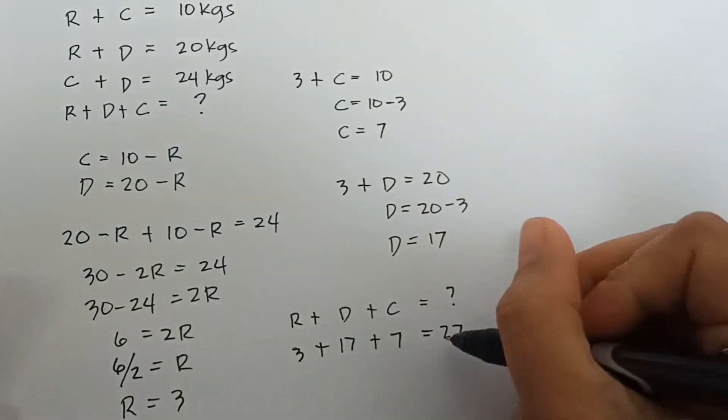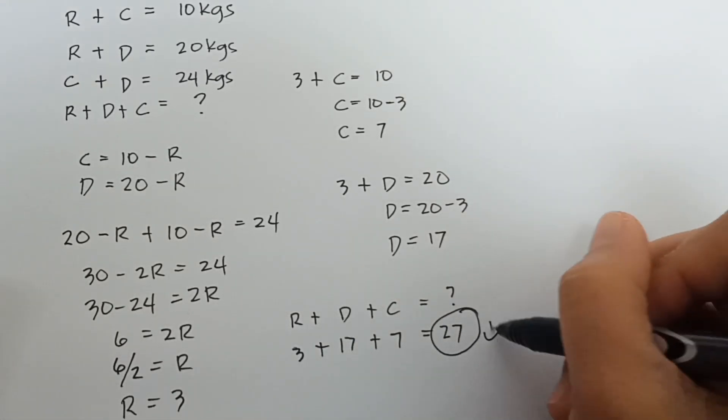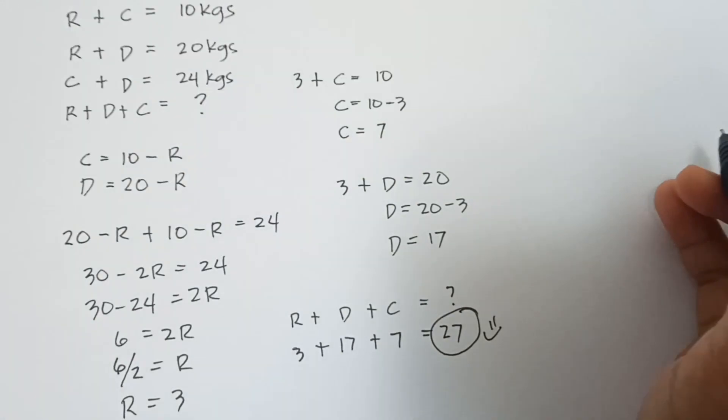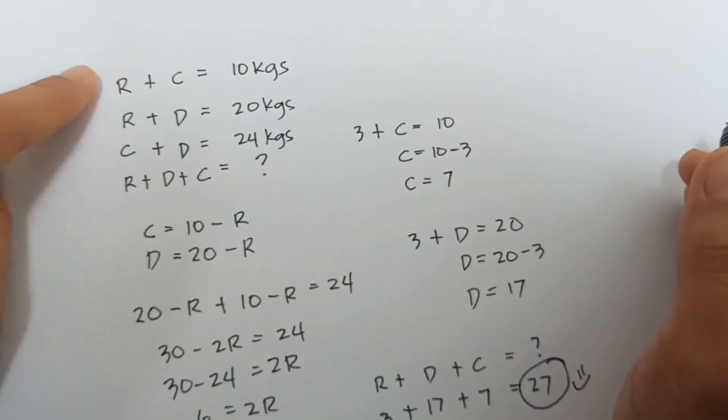So, the answer for this riddle, cat plus dog plus rabbit equals 27. Or, if you have a very shortcut method guys, just simply add the 3 equations. Just take a look, guys.